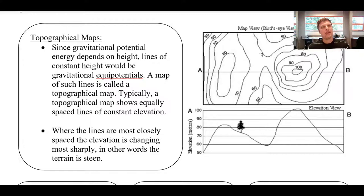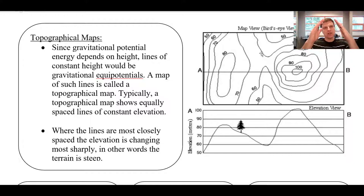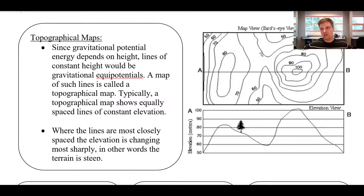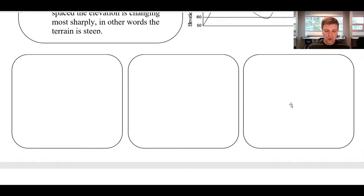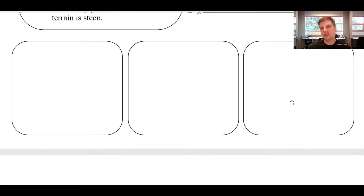We can think of electric potential as kind of like being height, where positive charges make mountains — really high areas of potential — and negative charges make valleys, or areas of really low potential. And if you have multiple mountains, they would just make multiple areas of high potential. So we're going to try and visualize this.